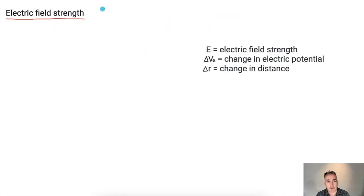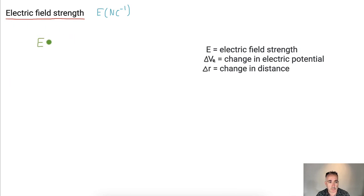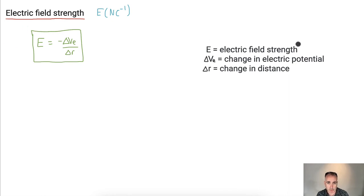Now let's look at electric field strength, E, measured in newtons per coulomb. We have a new equation for it: E equals negative VE over delta R, which you can find in your data booklet. So electric field strength is in newtons per coulomb, delta VE is the change in electric potential in volts, and the change in distance is in meters.